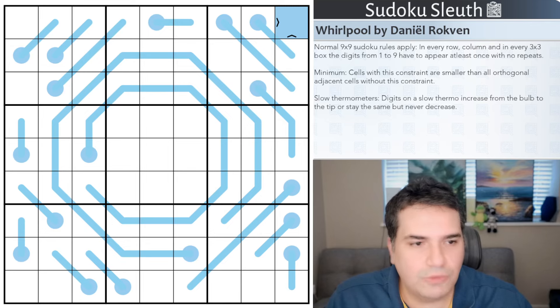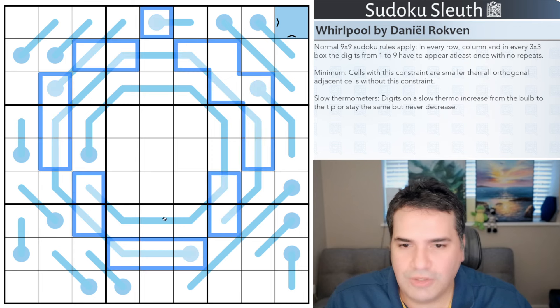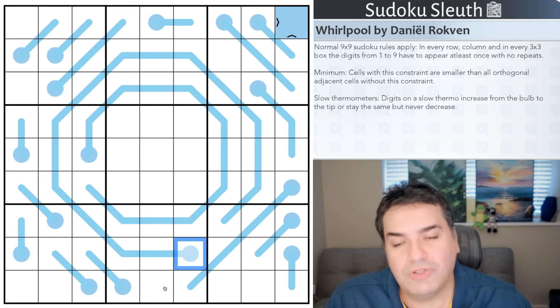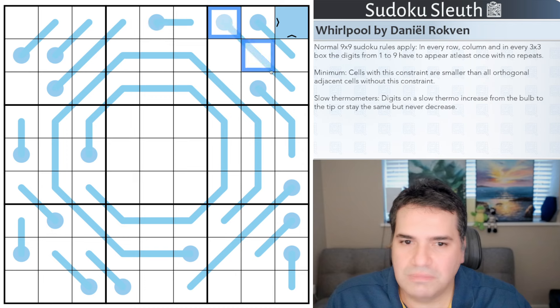We have Whirlpool by Daniel Rokven. We've featured quite a few puzzles from him on this channel now, I'd say quite a few, maybe like half a dozen. And they've all been absolutely stunning. And you can see very much from the title what's going on here. We've got all of these blue lines that are circling the middle, very much like a Whirlpool would. And it's even got almost like ripples on the outside. So it's not even necessarily complete Whirlpools, just as you would expect in real life.